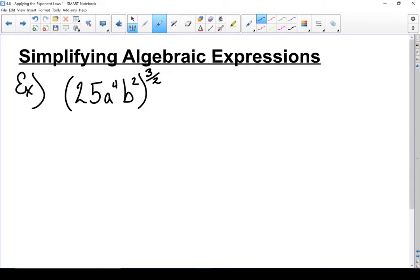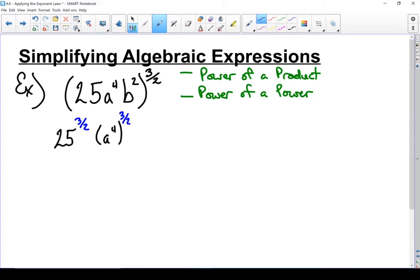But before we get there, let's use our exponent rules to simplify this. In this case, I'm using power of a product. I'm also using power of a power. I'm going to apply that 3 halves to every part of that term inside the brackets. And because some of those parts, like the a to the power of 4 and the b squared, already have powers, I'm going to have to use power of a power on those parts. So when I rewrite this, I'm looking at 25 to the 3 halves power. I'm looking at a to the power of 4 to the 3 halves power. And I'm looking at b squared to the 3 halves power.